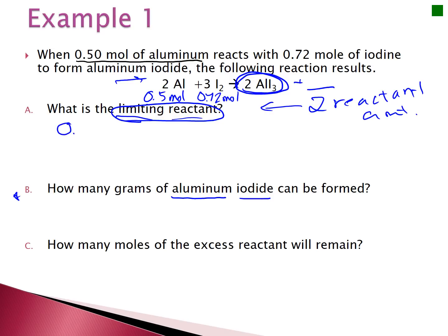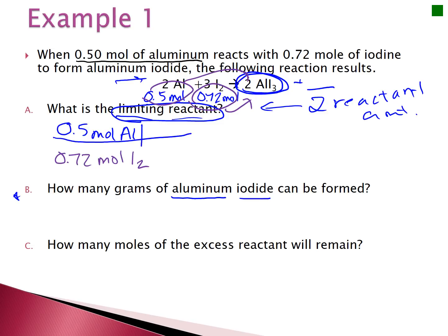Write down both of your amounts: 0.5 moles of aluminum for the first stoichiometry problem. Convert moles of aluminum to moles of aluminum iodide using the balanced reaction coefficients of 2 to 2. When you multiply that out, you get 0.50 moles of aluminum iodide. You can stop at moles of the product — I'll go to whatever the later question asks about.